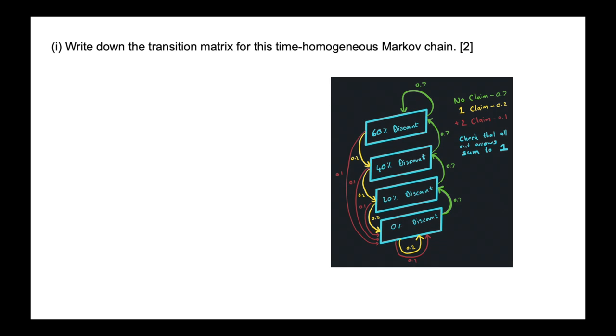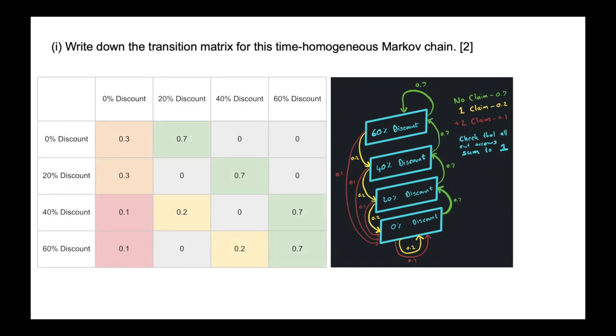Now, what we need to do is the very first part of the question, which is write down the transition matrix for this time homogeneous Markov chain. Now, if you're going to jump straight into the step without drawing up that diagram, chances are you're going to make a couple of mistakes. But by drawing up the diagram, you're going to see how easy it is to make this transitional matrix. So we've got our diagram over here. And essentially, our matrix, we have 0, 20, 40, 60, 0, 20, 40, 60.